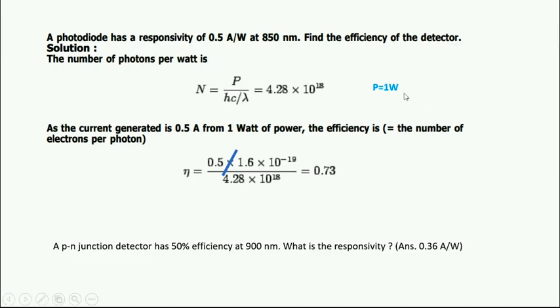We can find number of photons N = P/hν. Because λ is given, frequency is not given, we can find ν = c/λ. c is the velocity of light, so h is constant, c is constant, λ is given and P is given. Then we can find number of photons is equal to 4.28 × 10^18. As the current generated is 0.5 ampere, this many photons are generated. As the current generated is 0.5 ampere from one watt power, the efficiency equals number of electrons per photon. Total number of photons is this much and the total current is given. We know the charge of electron, so that is 0.5 ampere divided by charge of one electron, 1.6 × 10^-19, divided by number of photons, total number of photons. So the efficiency you are getting is 0.73.